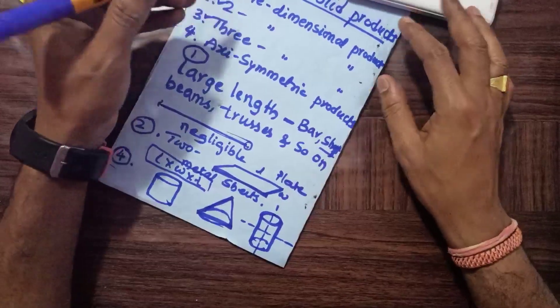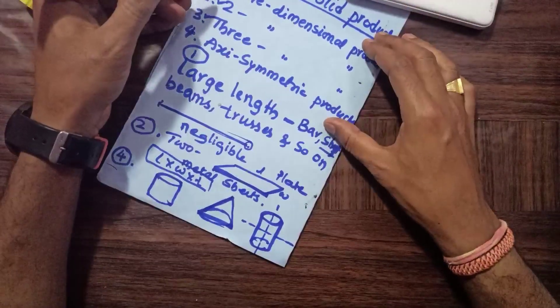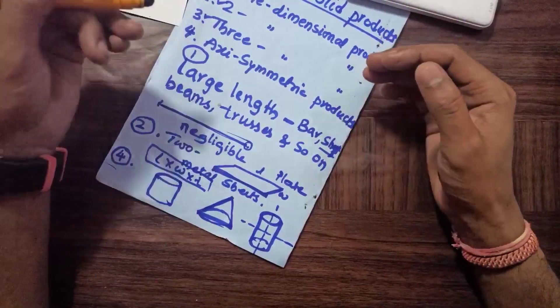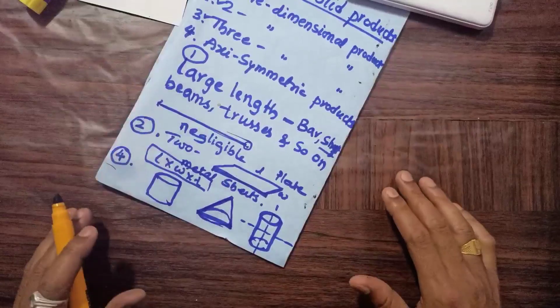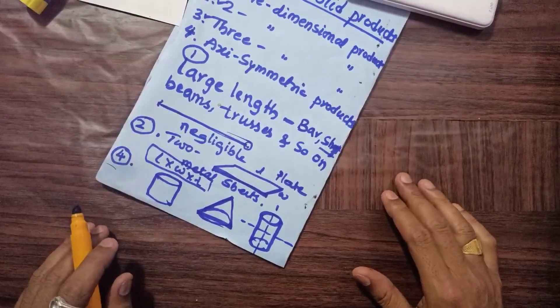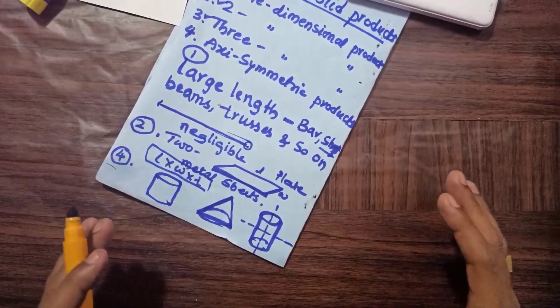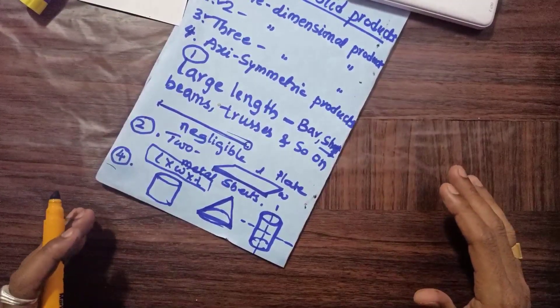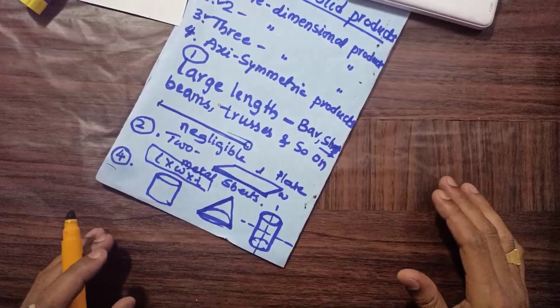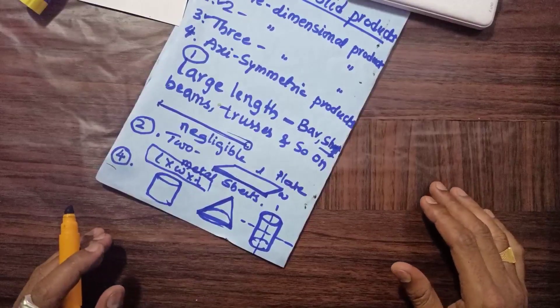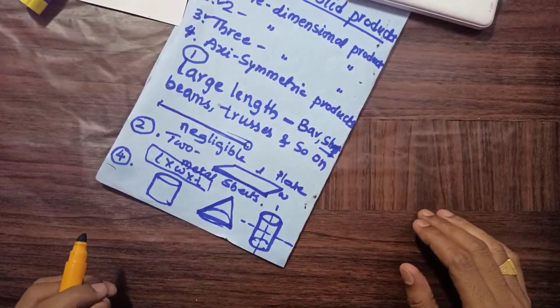So these are the best examples to understand the types of solid products. I hope you have understood. If you did, please subscribe to the channel for more updates on the Finite Element Method. Thank you once again.